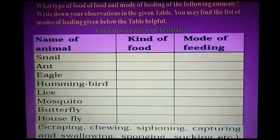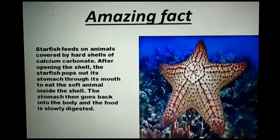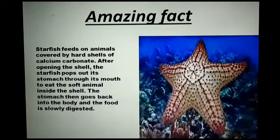The next is an amazing fact from your NCERT book: starfish feed on animals covered by a hard shell of calcium carbonate. After opening the shell, the starfish pops out its stomach through its mouth to eat the soft animal inside. The stomach then goes back into the body and the food is slowly digested inside. That is why it is an amazing fact — because the starfish pushes its stomach out through its mouth to feed, and then pulls it back in.